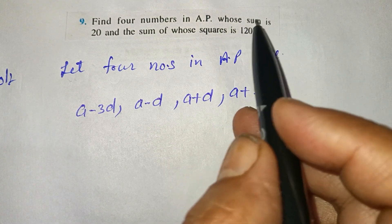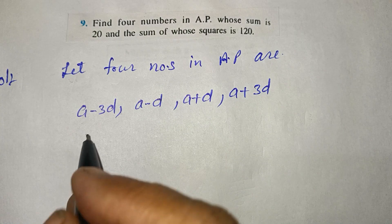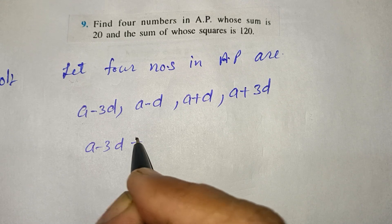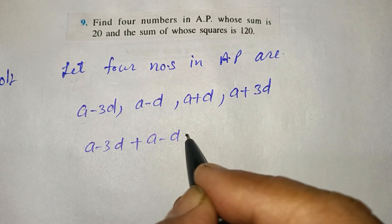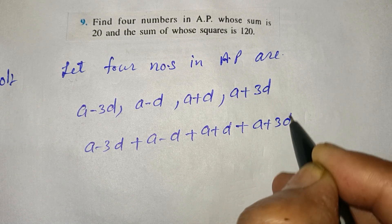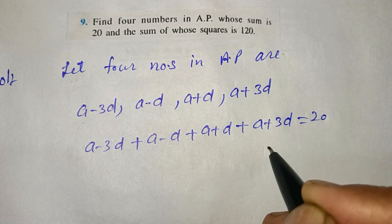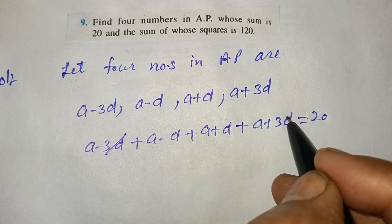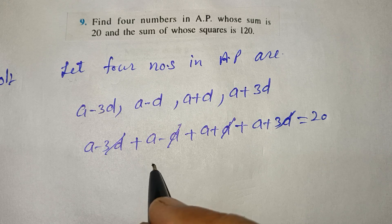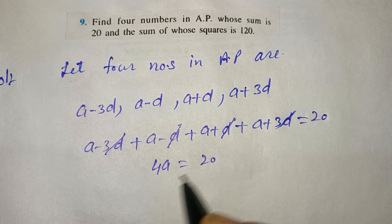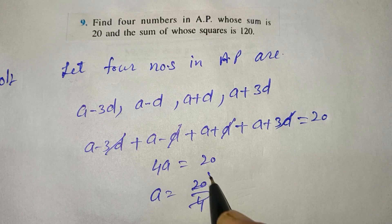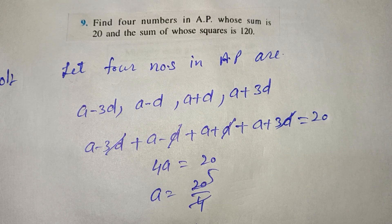Now, what is given? Their sum is 20. Add them: A minus 3D plus A minus D plus A plus D plus A plus 3D equals 20. The D terms cancel: minus 3D plus 3D, minus D plus D. So 4A equals 20, therefore A equals 20 upon 4, which gives A equals 5.